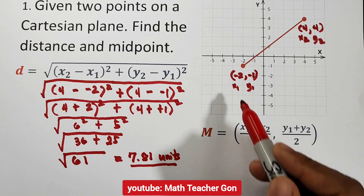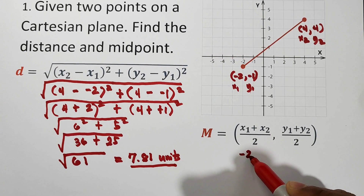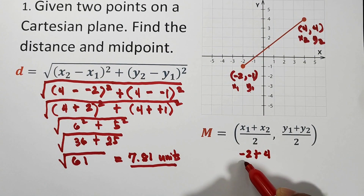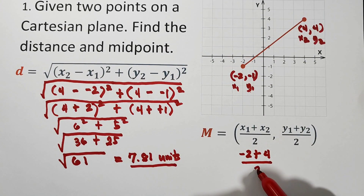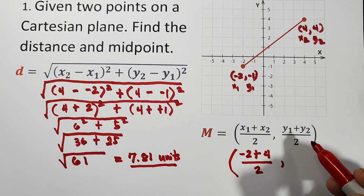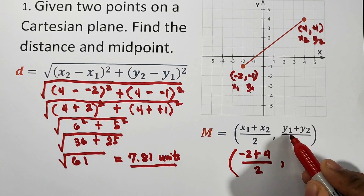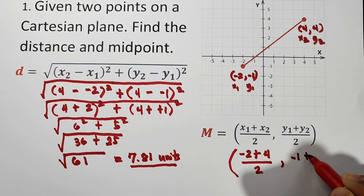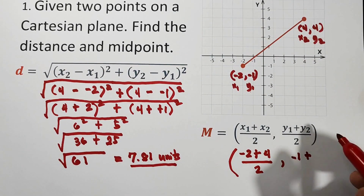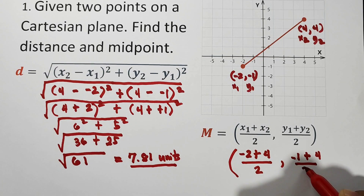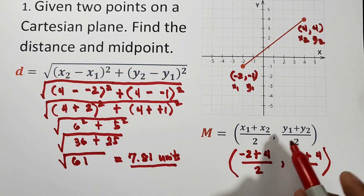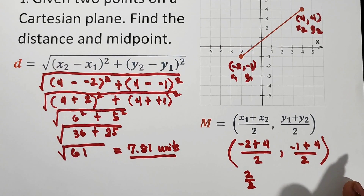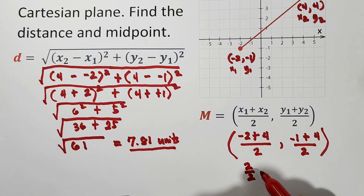Now let us substitute. x_sub1 is negative 2 plus x_sub2 is 4, divided by 2. And for values of y, y_sub1 is negative 1 plus y_sub2 is positive 4, divided by 2. Negative 2 plus 4 equals 2, and 2 over 2 equals 1.